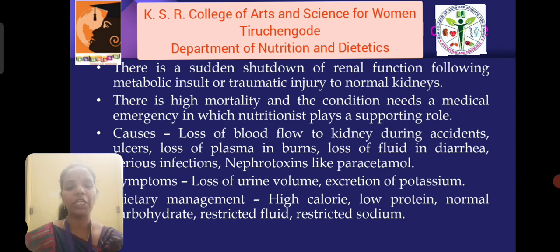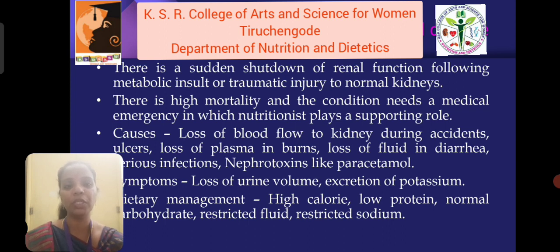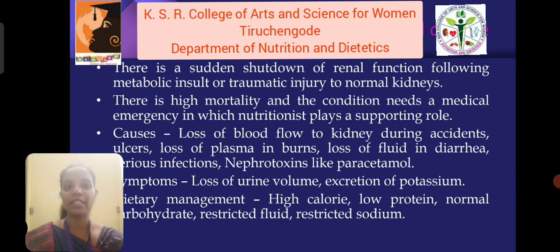Acute renal failure involves a sudden shutdown of renal function following metabolic insult or traumatic injury to the normal kidneys. There is high mortality and the condition requires medical emergency in which the nutritionist plays a supporting role. Causes include loss of blood flow to the kidney during accident, ulcer, loss of plasma in burns, loss of fluid in diarrhea, various infections, and nephrotoxins like paracetamol. Symptoms like loss of urine volume and excretion of potassium are observed.